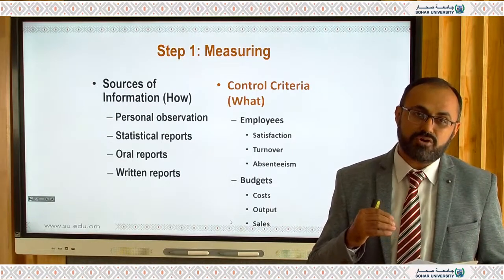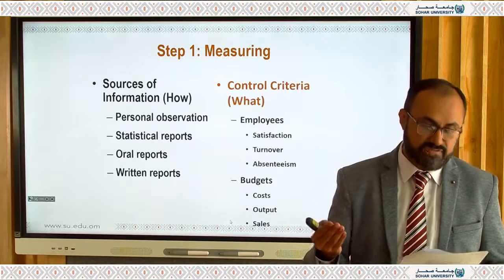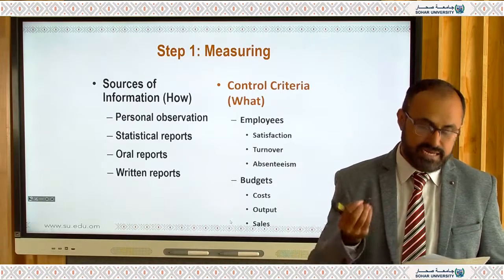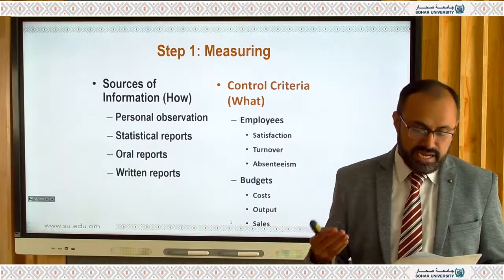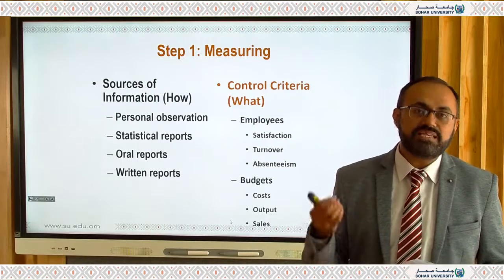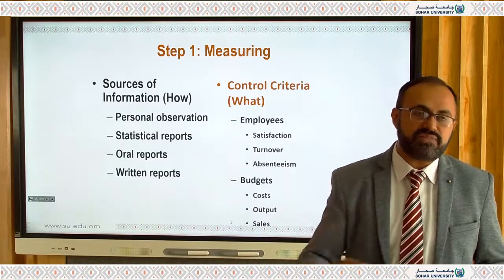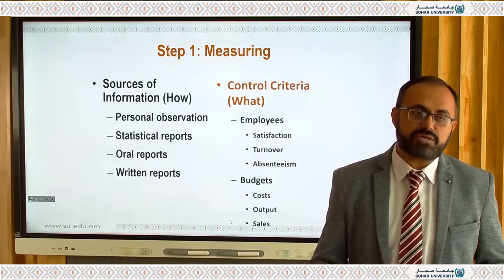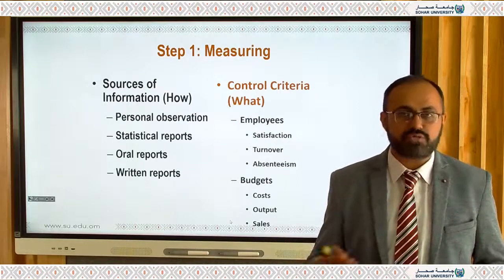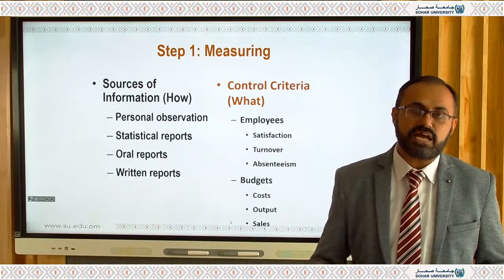For example, if a sales report shows sales going down due to COVID-19, that is the source of information signaling a problem, and you may consider shifting to online sales. Other control criteria include employee turnover, budget, cost, and output. If employees are repeatedly leaving the same department and you cannot retain them, there may be a problem with management or HR that needs to be corrected.